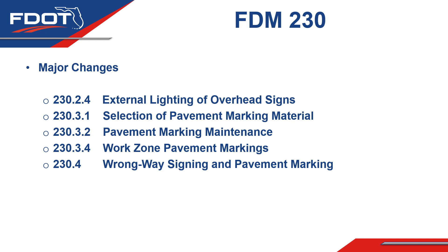The list of sections in Chapter 230 with significant changes includes section 230.2.4, external lighting of overhead signs; section 230.3.1, selection of pavement marking material; section 230.3.2, pavement marking maintenance; section 230.3.4, work zone pavement markings; and section 230.4, wrong way signing and pavement marking.